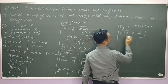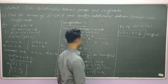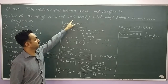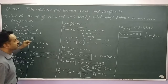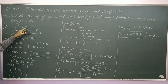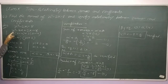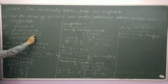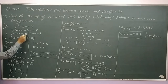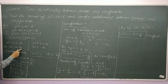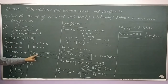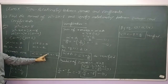So it is verified. In this question, to find the zeros of x squared minus 2x minus 8, we factorize by splitting the middle term: x squared minus 4x plus 2x minus 8. Taking x common gives x(x minus 4) and taking 2 common gives 2(x minus 4). So x minus 4 is common, giving factors (x minus 4)(x plus 2). Therefore x equals 4 and x equals minus 2 are the zeros — let alpha equal 4 and beta equal minus 2.